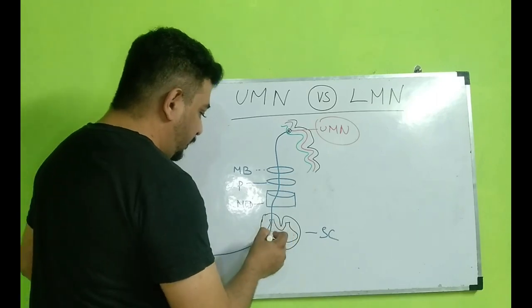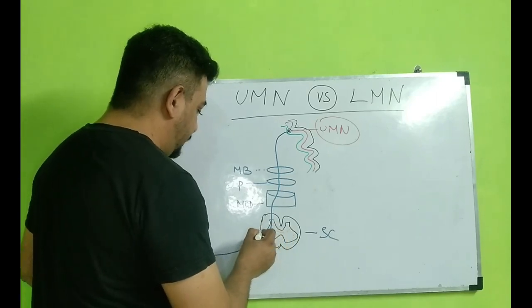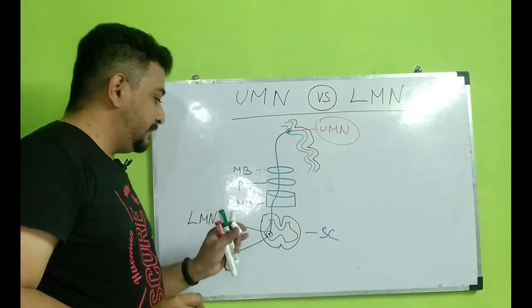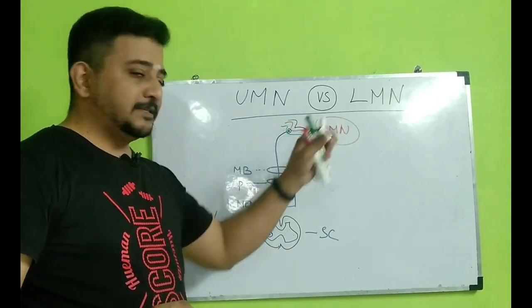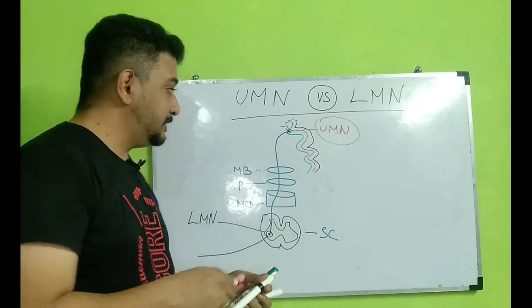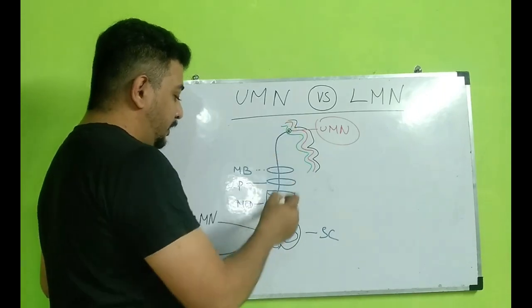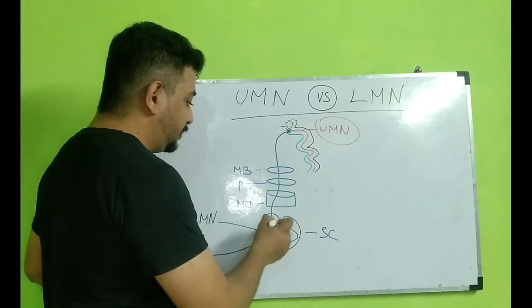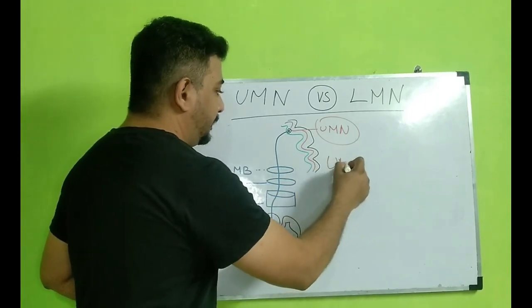So these anterior horn cells are called as the lower motor neuron. When I say this as a lower motor neuron and this as the upper motor neuron, wherever the lesion happens between the upper motor neuron till these anterior horn cells, then that is called as an upper motor neuron lesion.